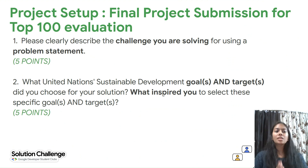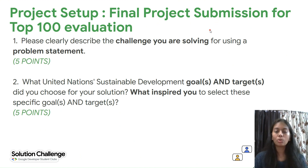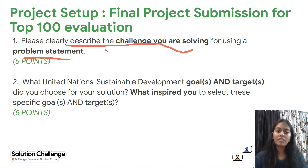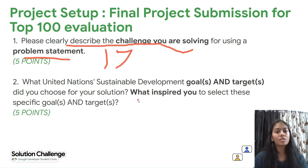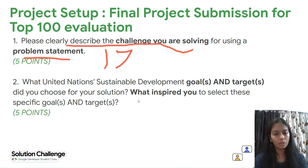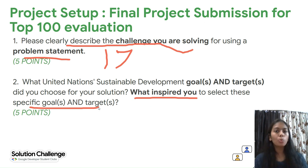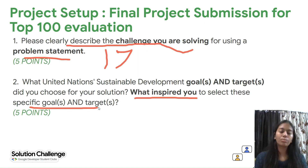The first criterion: clearly describe the challenge you are solving. From the 17 Sustainable Development Goals, describe which UN sustainable goal and targets you chose and what inspired you to select those specific goals — what motivated you to produce a solution for that topic.